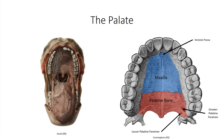The posterior border of the hard palate is continuous with the fibromuscular soft palate. The anterior portion of the soft palate is made up of a tendinous aponeurosis, which multiple muscles attach into. Posteriorly, the palate is more muscular, terminating in a free margin that curves inferiorly. The uvula is the most prominent structure along this margin, dangling in the midline and one of the most recognizable structures in the open mouth.